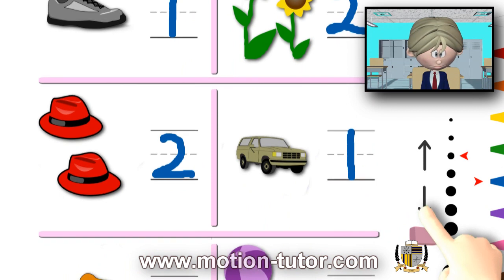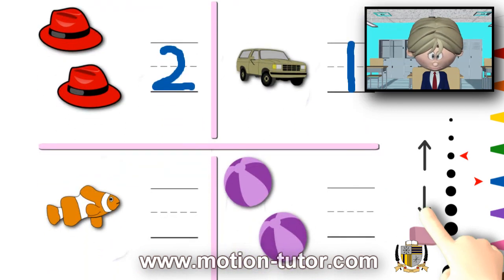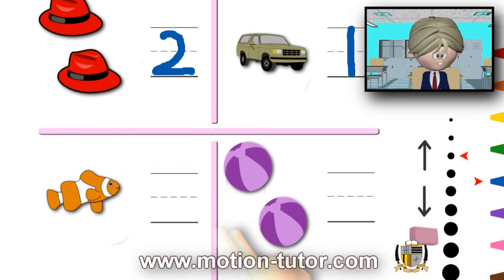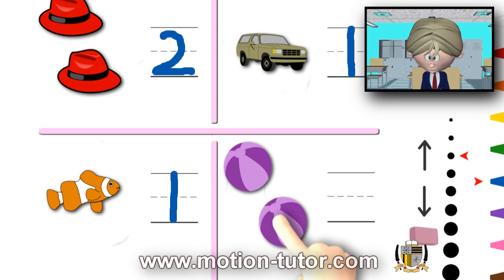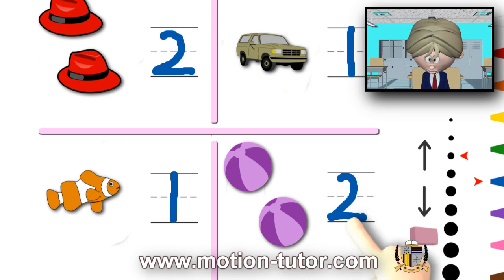Let's look further down. I see 1 clownfish. So, we write the number 1. And I see 1, 2 beach balls. So, we write the number 2. And that's it.